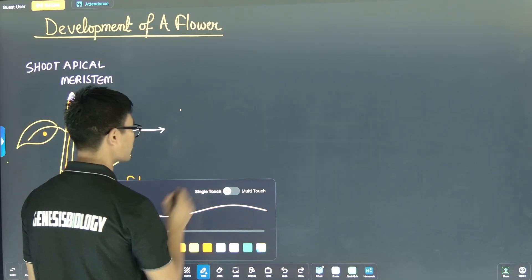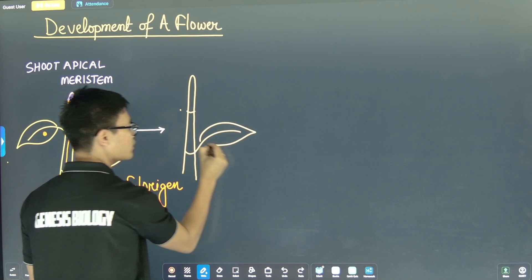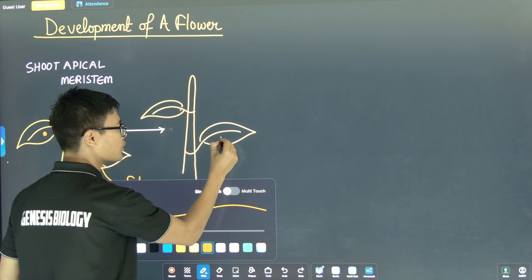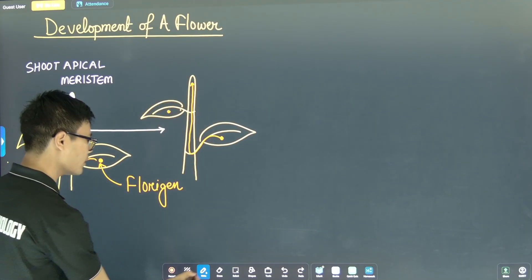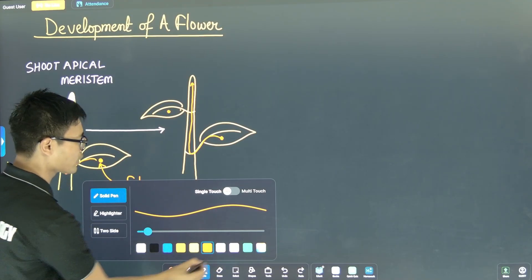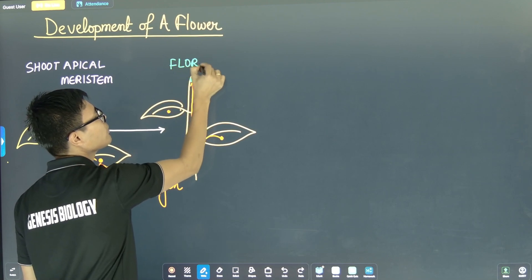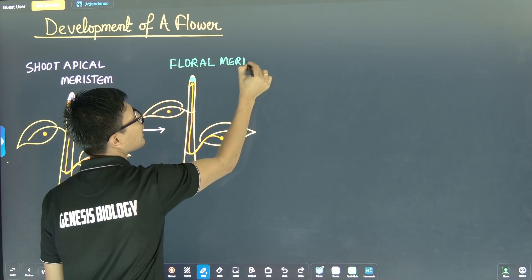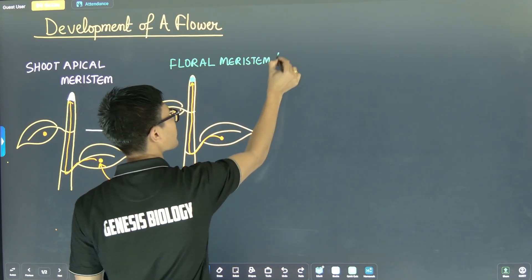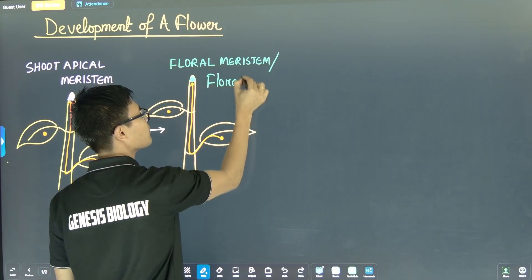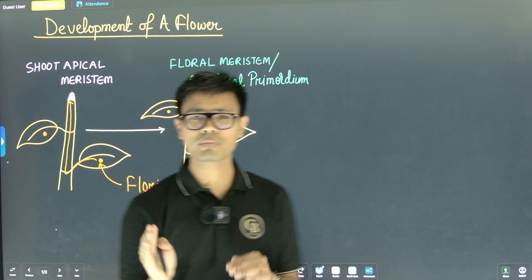After florezine reaches the shoot apical meristem, it causes the shoot apical meristem to change into floral meristem. These leaves contain florezine. The floral meristem is also called Floral Primordium in NCRT. So the shoot apical meristem changes into floral meristem, also known as Floral Primordium.